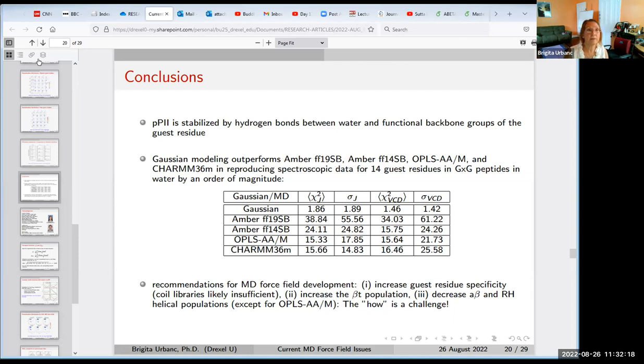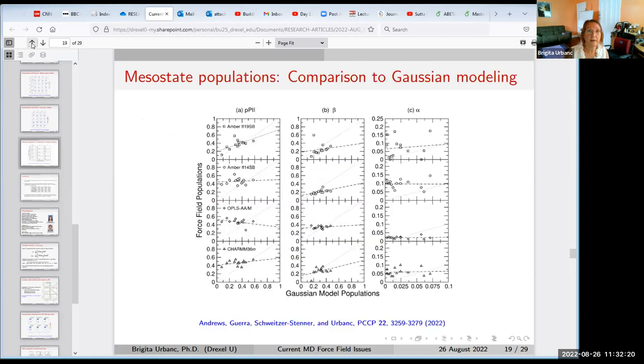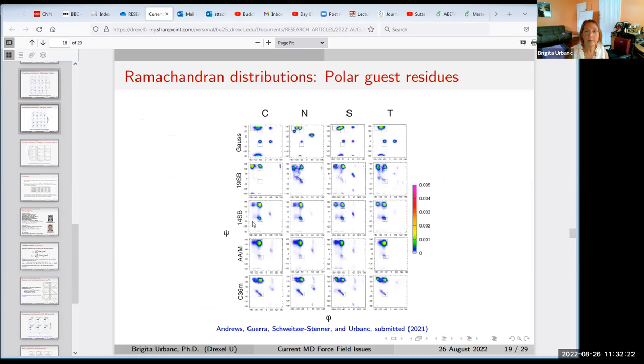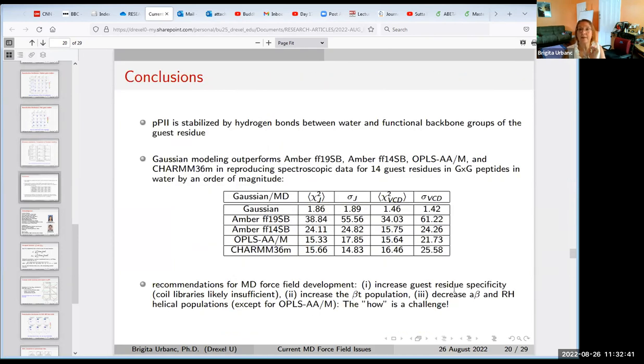If I can show only one slide, it would be that when the Gaussian model shows a large diversity in the Ramachandran distributions among the polar residues, most force fields produce virtually the same Ramachandran distribution that is reaching PP2, too much PP2. So there's no guest residue specificity in molecular dynamics force fields, or it's insufficient or it's wrong if it's based on phi-psi libraries.